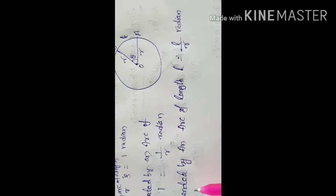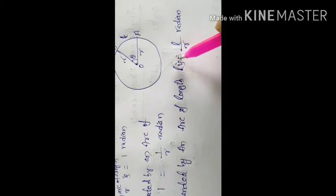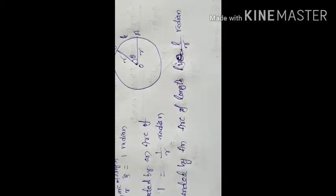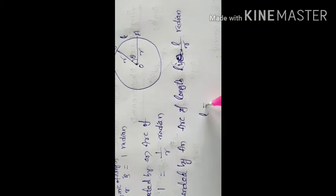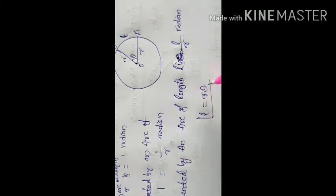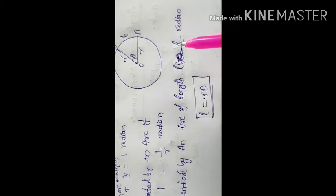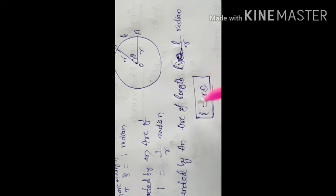So theta equals L by R. Finally, we conclude that the length of an arc subtending angle theta at the center of a circle of radius R is L = Rθ.